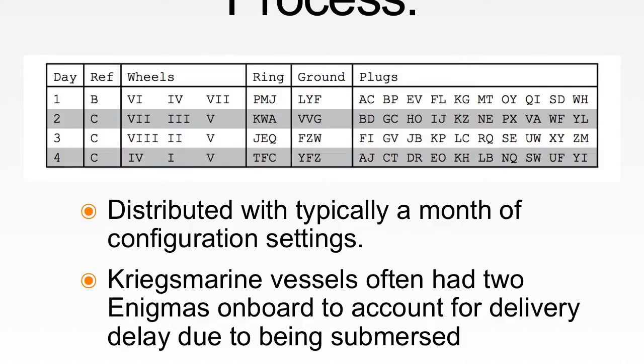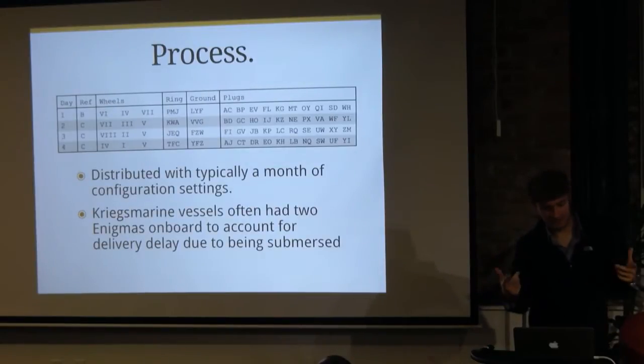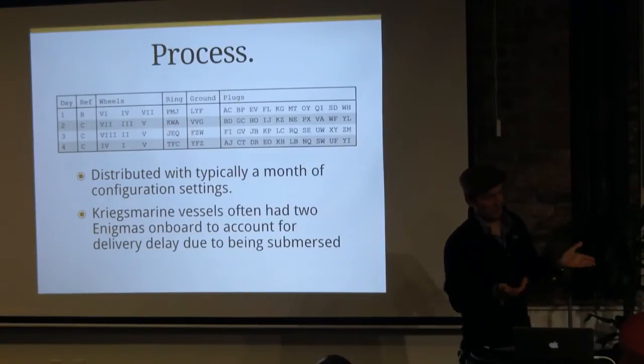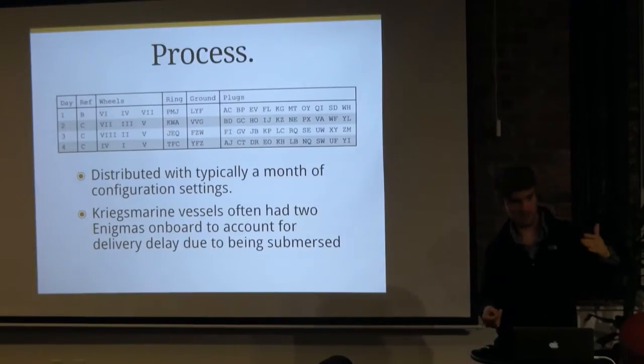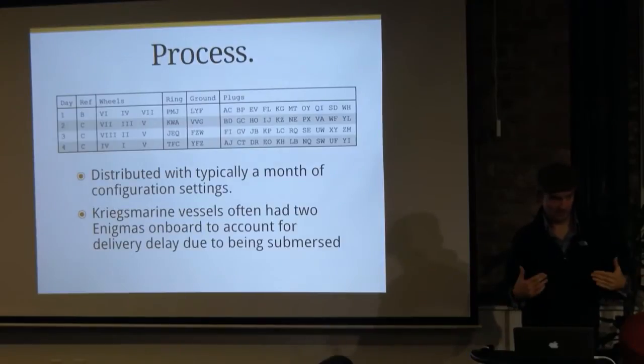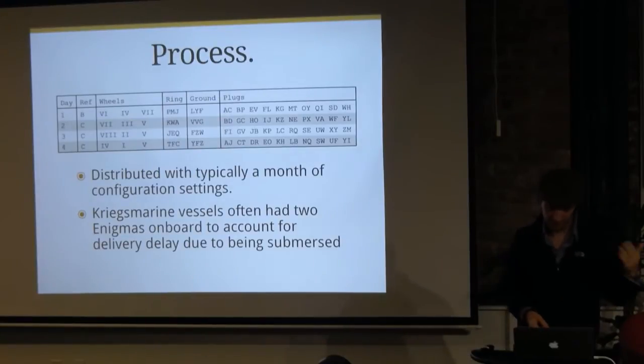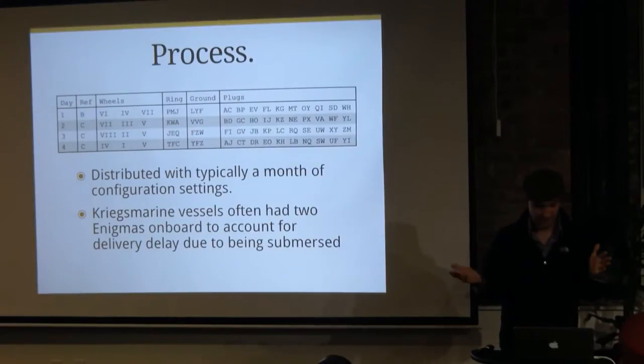From a key perspective, if anyone's going to say, aha, but this is going to be like a key problem, how do you do the key distribution? The keys are the configurations of the machines. They would have this day sheet. You would say the first part of your message, day one, and that day one would be transferred in the clear. The receiving message, you would look at your day sheet and figure out how your machine should be configured. In this case, you can see use the B reflector, this wheel, this wheel, this wheel, where the rings are configured, the grounds, and then put all the plugs in. They would typically do them with a month. As I mentioned, Kriegsmarine vessels often had two because they were submersible sometimes and didn't get messages.